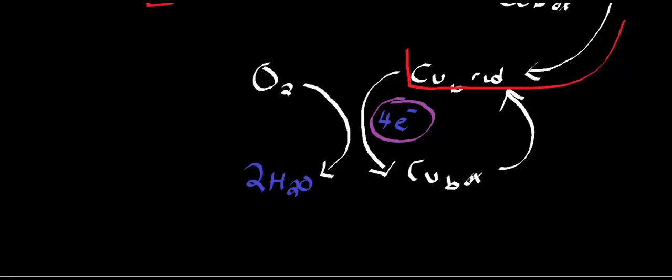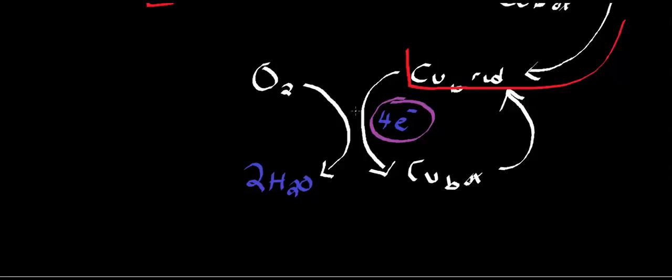This is the terminal electron transfer. The question becomes: why do humans need oxygen? This is your answer. Humans need oxygen because oxygen is the final electron acceptor. It's receiving the electrons from copper B, but ultimately receiving them from cytochrome C through a series of electron transfers.